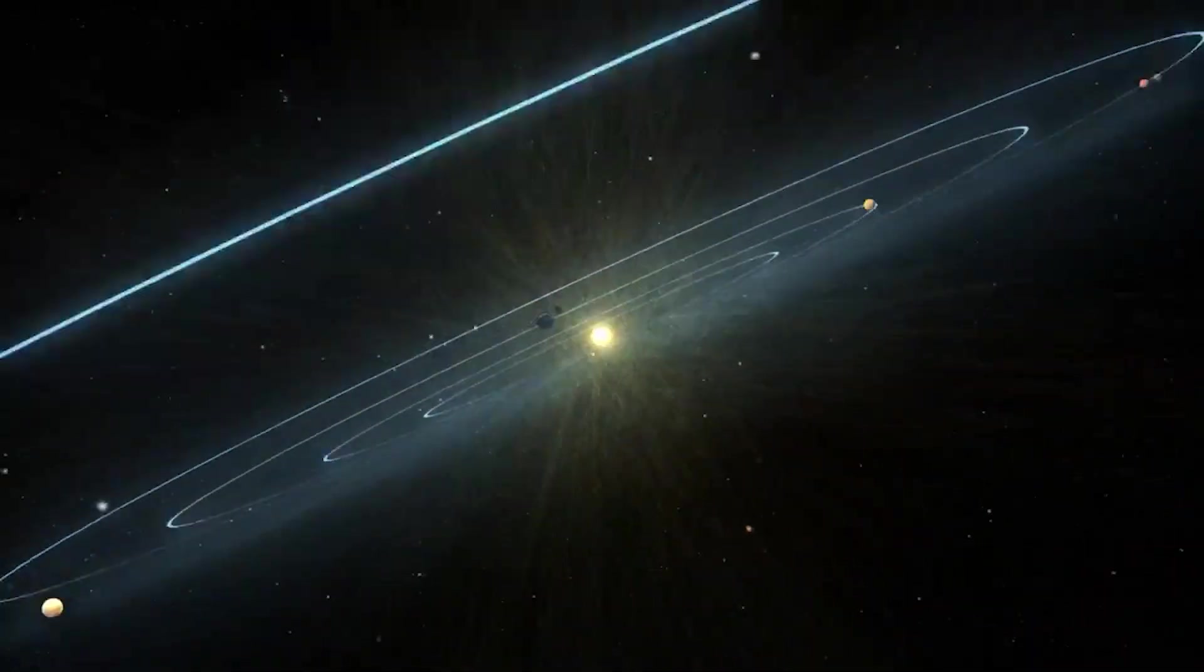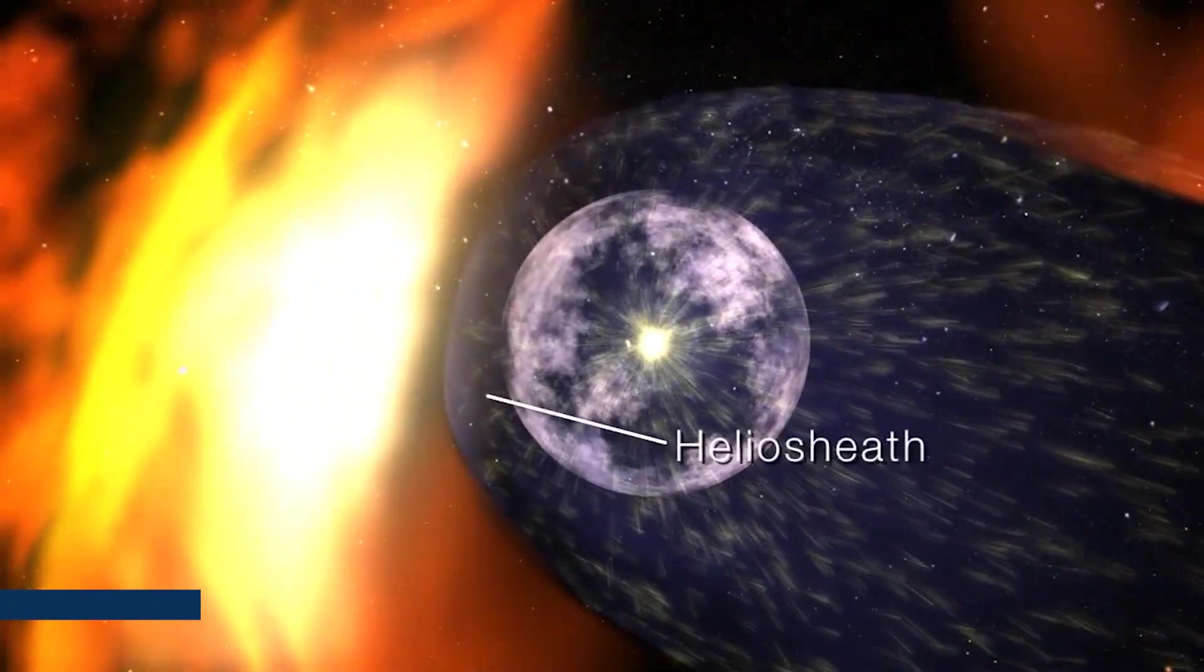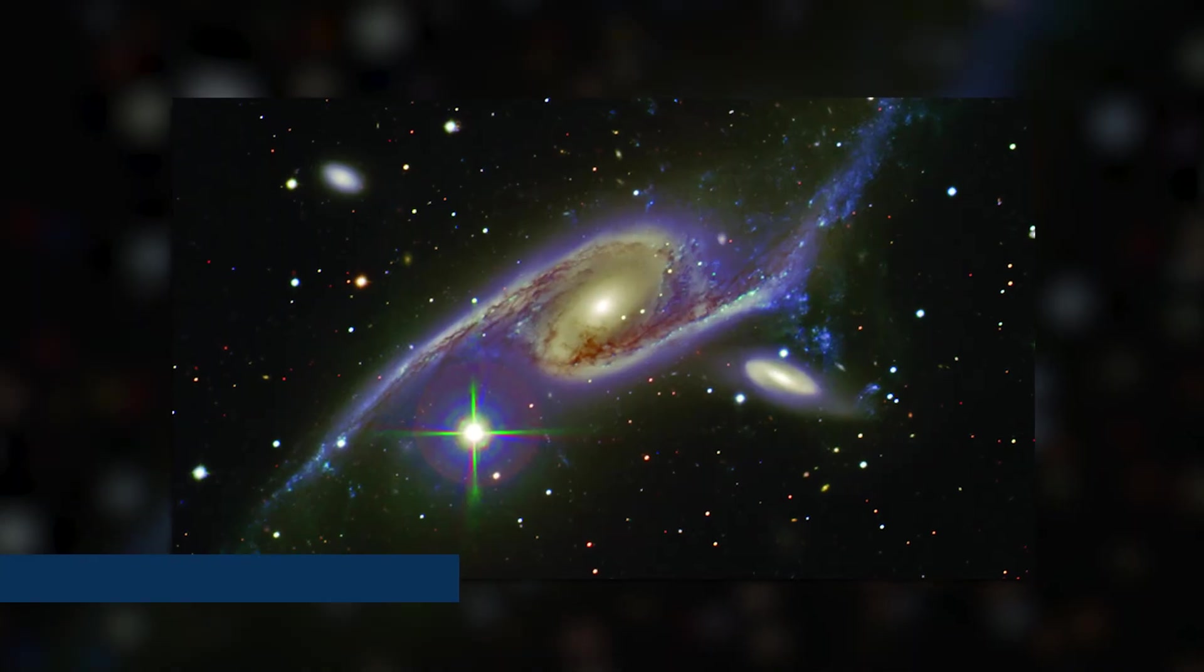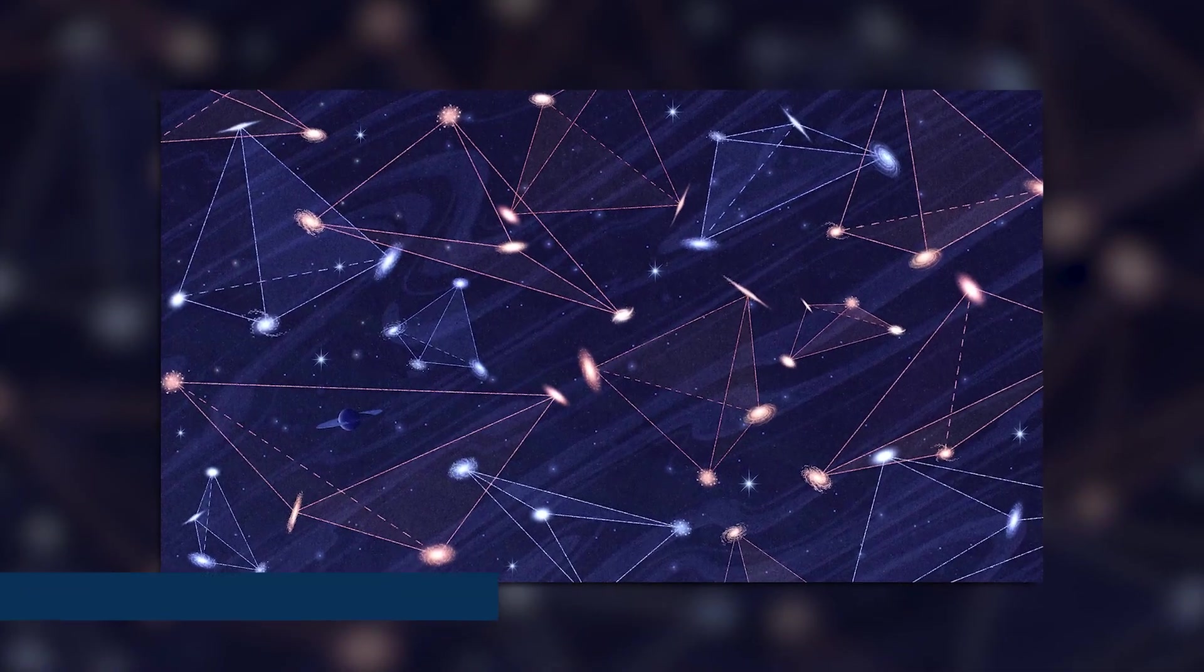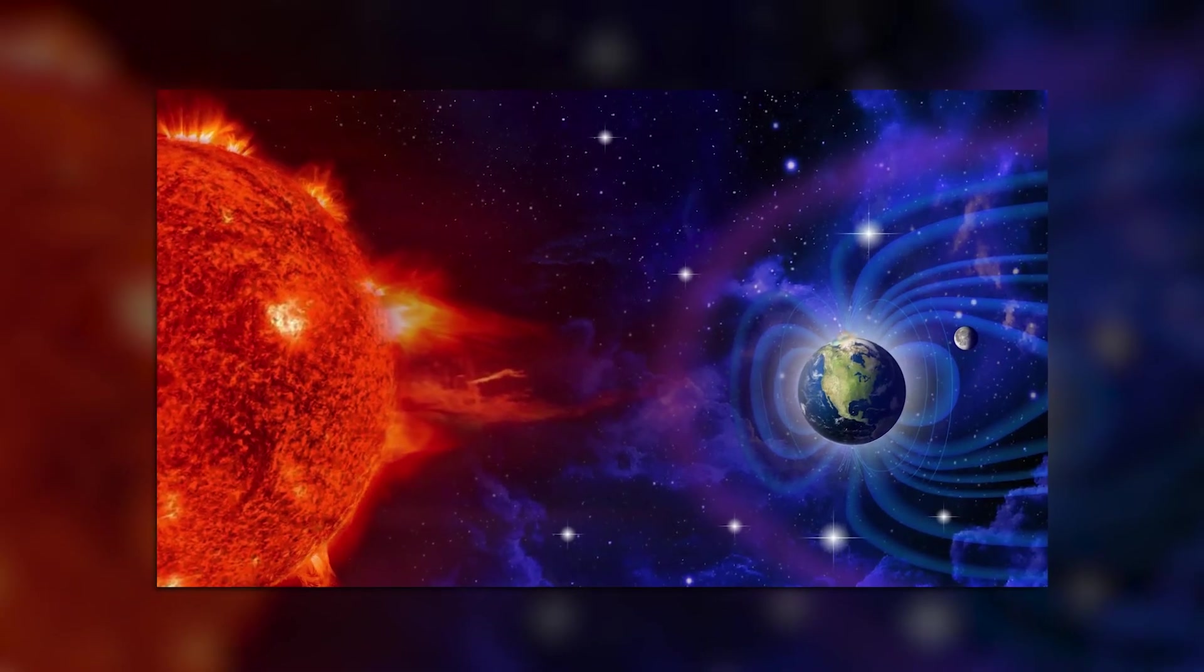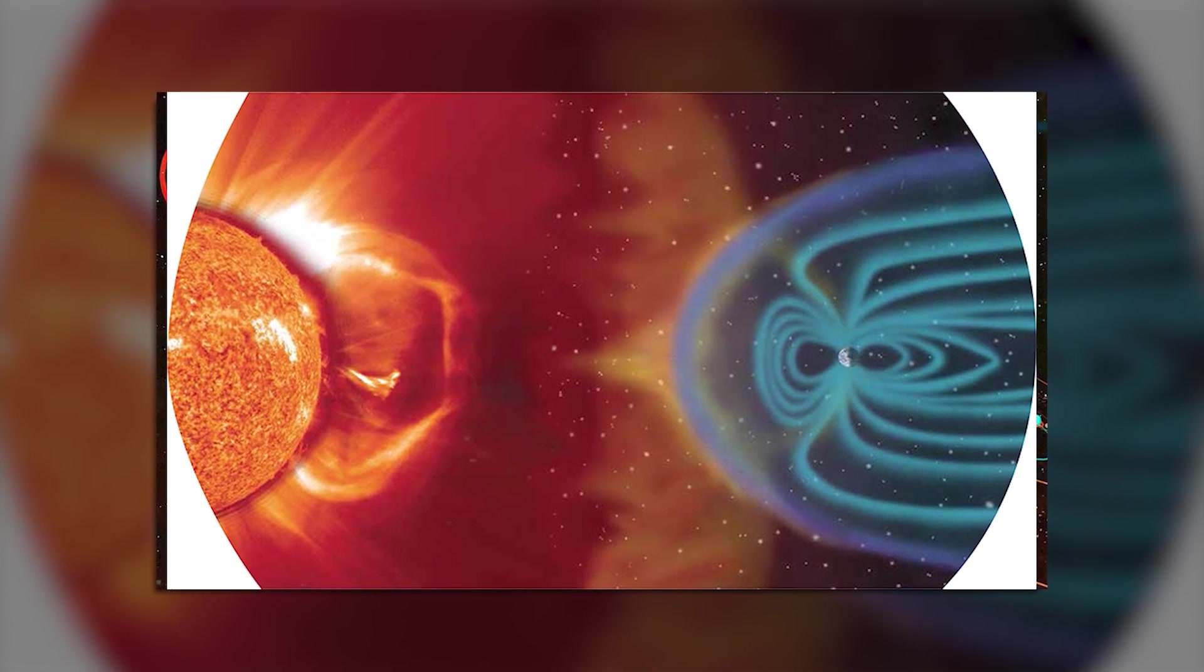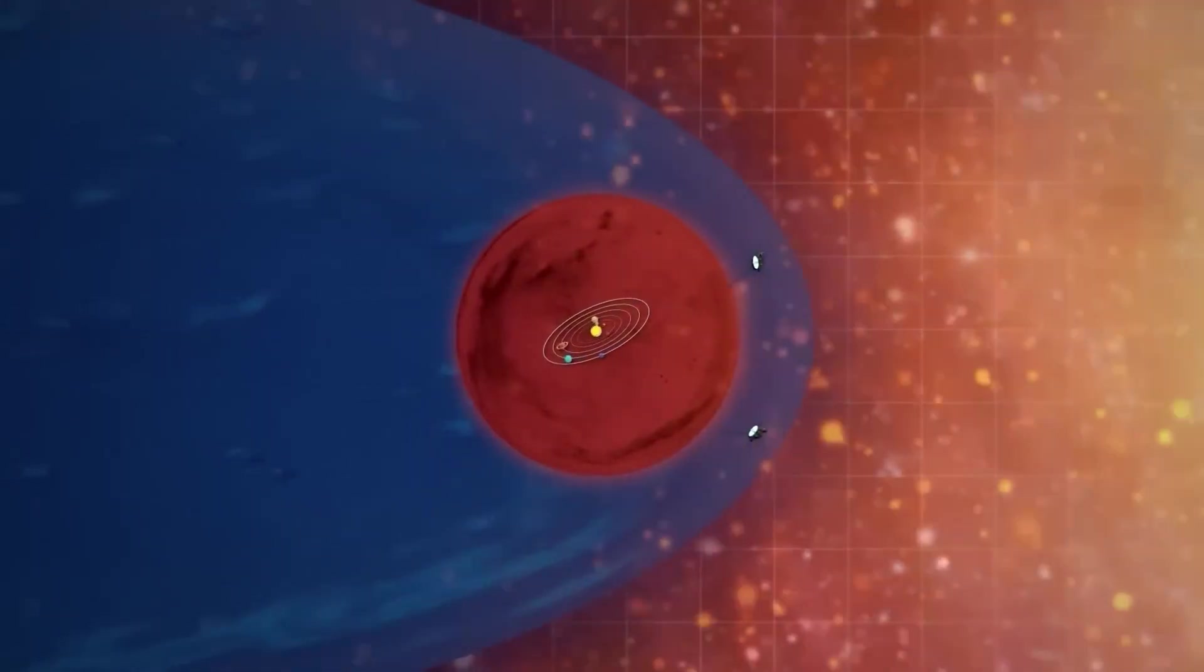This distortion means that some regions of the heliosphere are thinner or weaker, making those areas more vulnerable to the infiltration of cosmic rays and interstellar material. Conversely, other parts remain more robust, providing better protection. The asymmetry affects how the solar system interacts with the surrounding galaxy, influencing the flow of charged particles and magnetic energy. These interactions may even impact Earth's climate by modulating the intensity of cosmic radiation reaching our atmosphere. The heliosphere's shape and fluctuations are now understood as a dynamic dance between the Sun's solar wind and the vast galactic environment, a boundary constantly shaped and reshaped by cosmic forces.